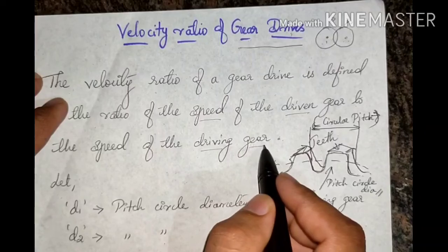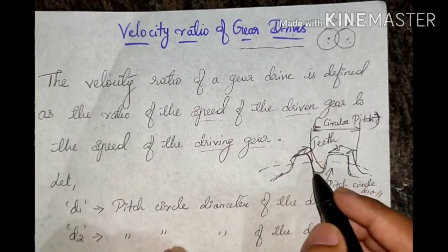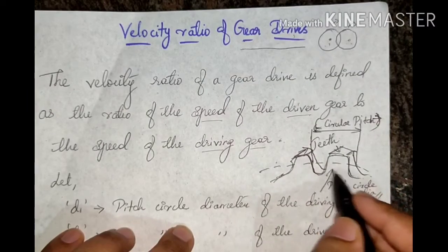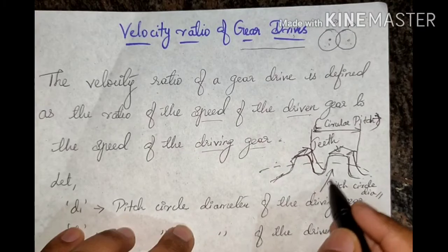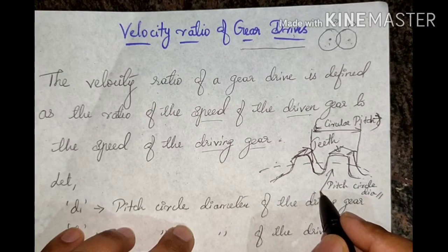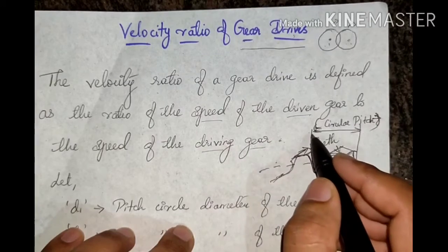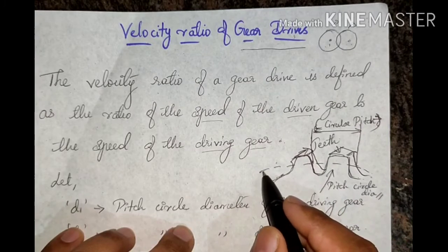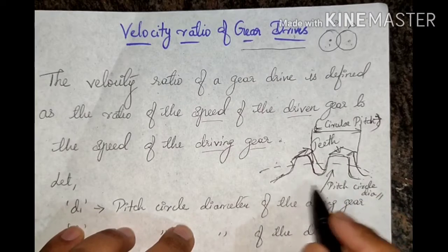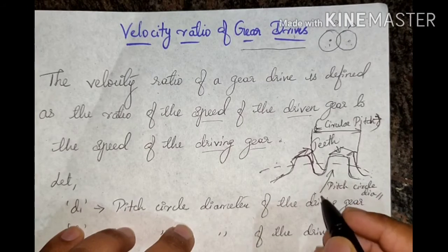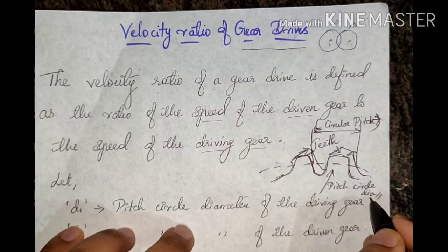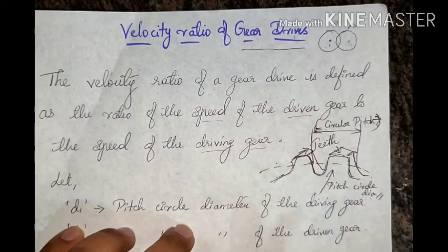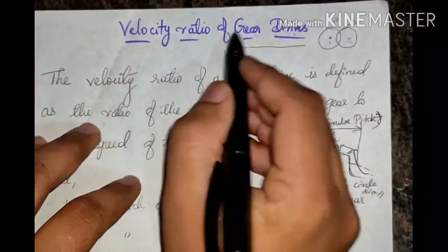Let us look at the gear profile. This shows the teeth of a gear. The circle diameter is measured from the center of the gear. The circular pitch is the distance between two adjacent teeth. The line passing through the center of the teeth at the pitch circle distance from the center of the gear defines the pitch circle, and the distance between the pitch circles of two meshing teeth is known as the circular pitch.